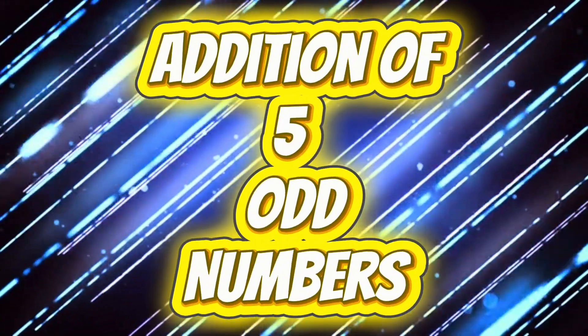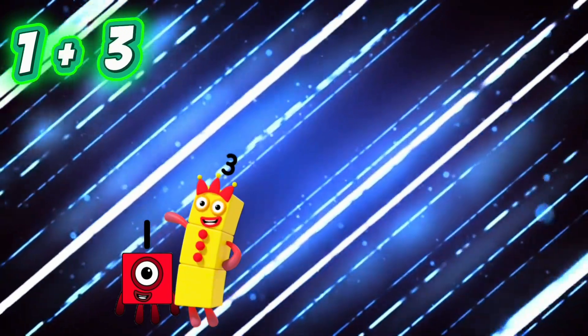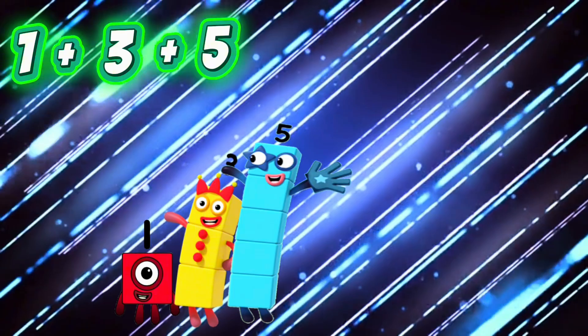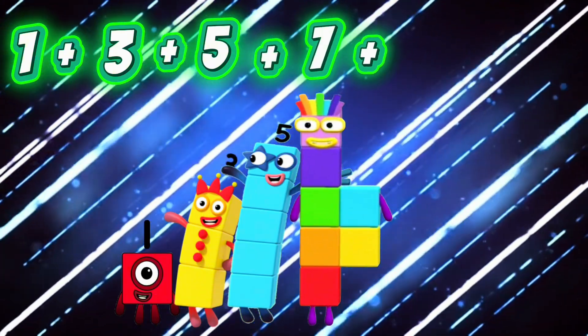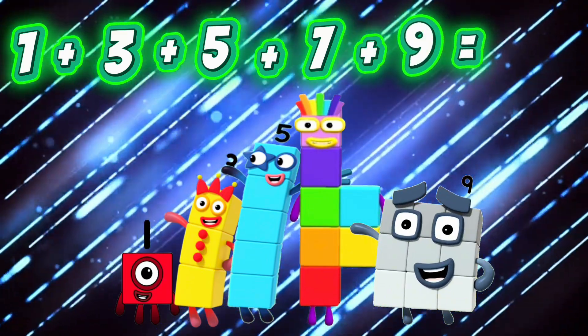Addition of 5 odd numbers. 1 plus 3 plus 5 plus 7 plus 9 is equals to